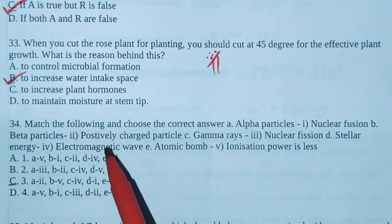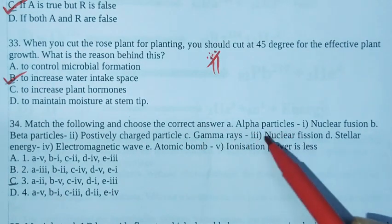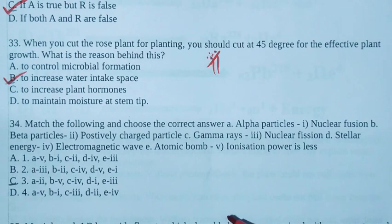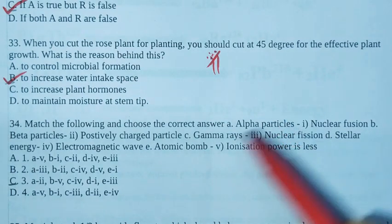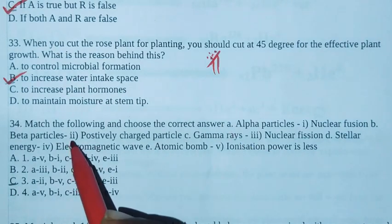34th one, match the following and choose the correct answer. A is alpha particle. We can write this easily. Alpha particle - positively charged particles. A equals 1.